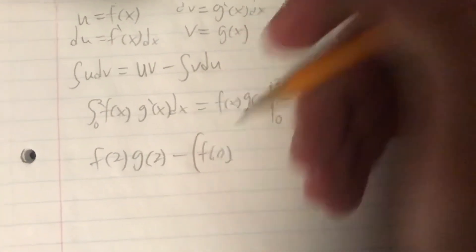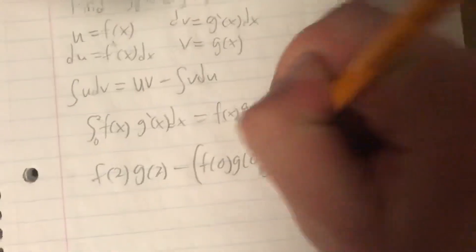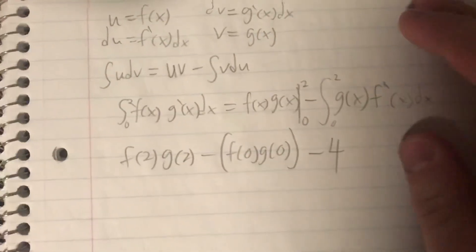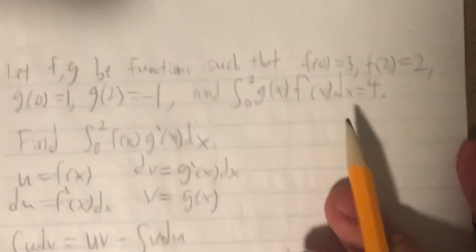So, it's going to be f of 2 times g of 2, minus f of 0, times g of 0, as the way the bounds are, and then minus 4. So, let's just plug those values in that were given up above.